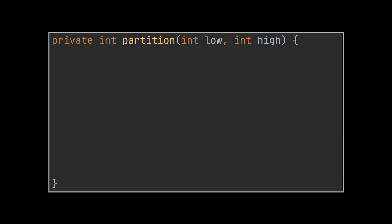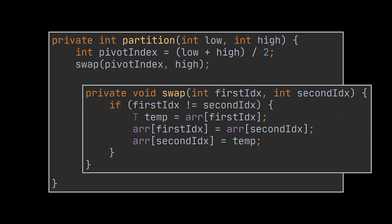Before diving into the sort method, let's implement the partition or categorize method. This method will take the upper and lower bound indices of the subarray it needs to partition. Similarly to our example, the first thing we need to do is calculate the pivot, which is the middle index of this array. The next thing we do is swap the pivot with the last element of the array. I placed the swapping logic inside a helper method to make the partition method easier to read and more concise.